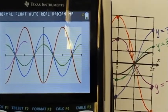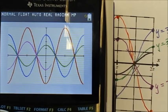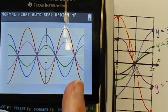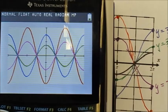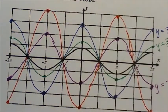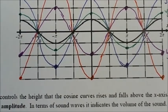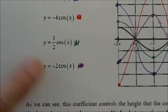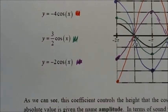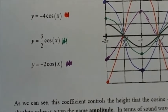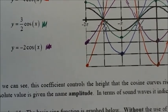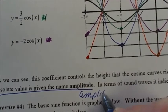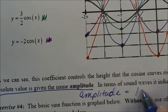As we can see, the coefficient controls the height that the cosine curve rises and falls above the x-axis. Its absolute value is given the name amplitude. So amplitude equals the absolute value of A.